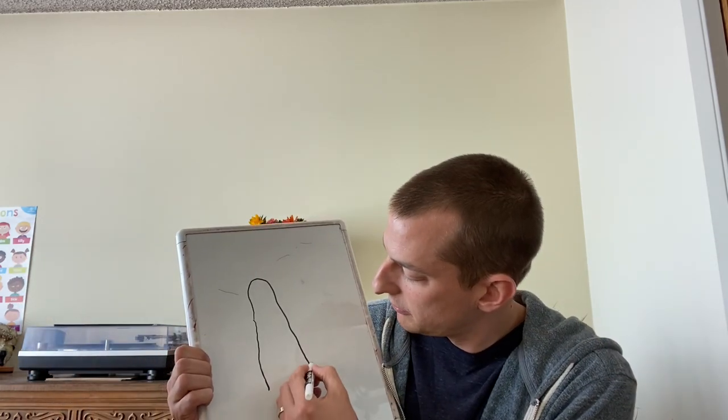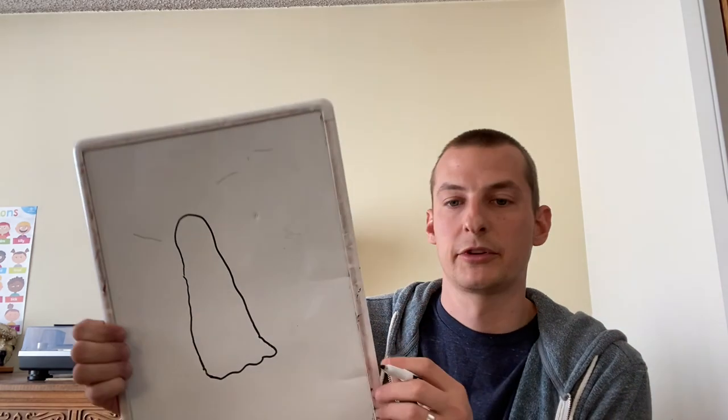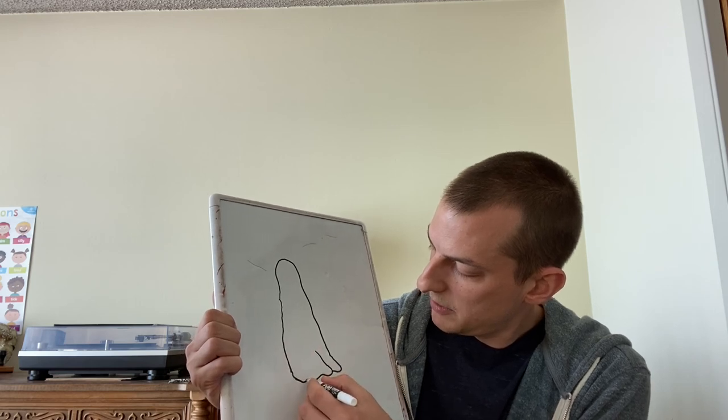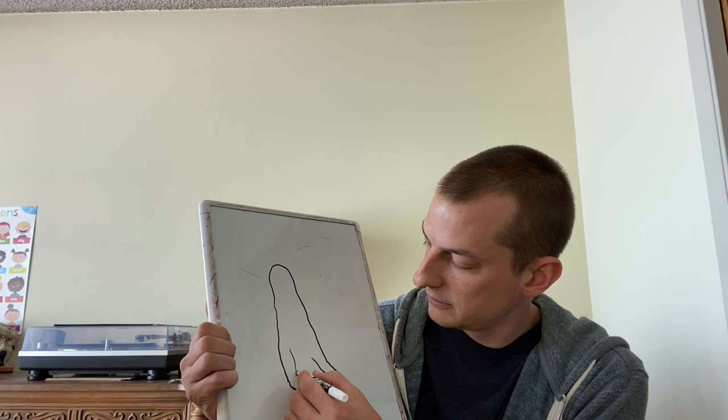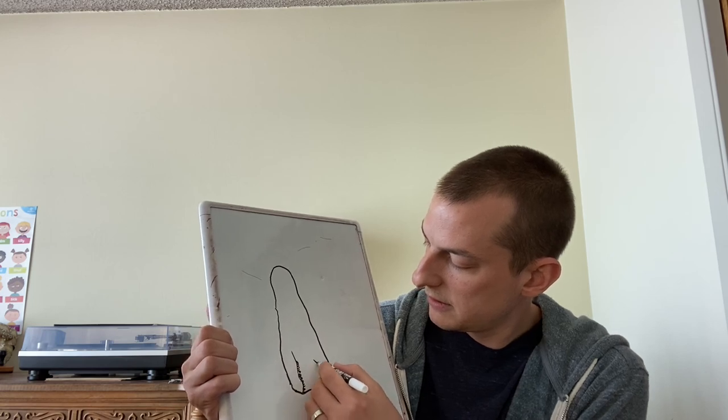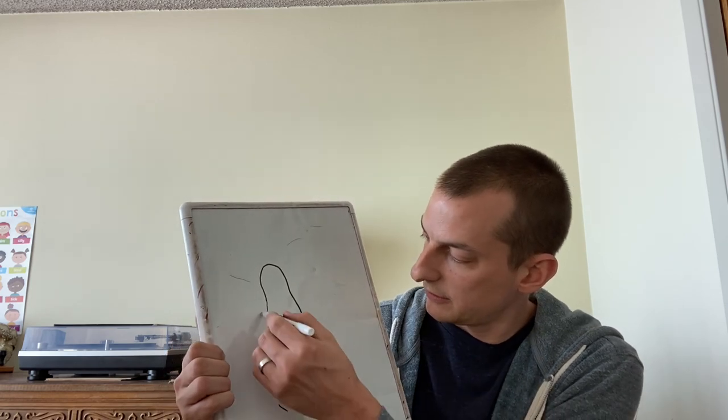So I might draw some ripples at the bottom like this. And then maybe I'll put some lines in there to give it some texture and some shading. And then I might even draw some lines around it like this, like it's moving.